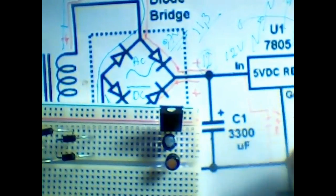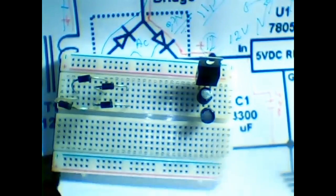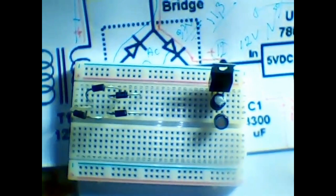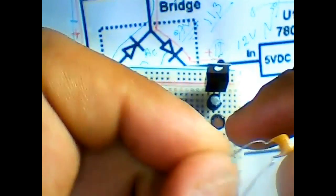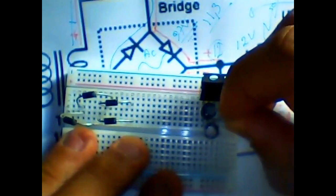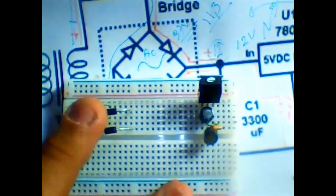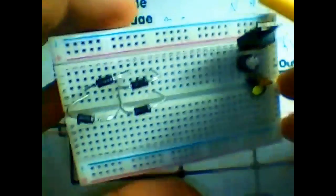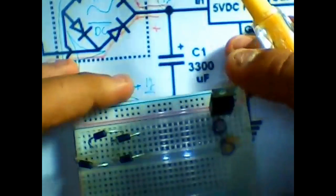Here is plus and here is minus — this part is done. Another capacitor goes from plus to ground. We're also going to use one nano-farad ceramic capacitor. The ceramic capacitor doesn't need polarity, so you can put it either way and it will not blow. One lead here and one here.